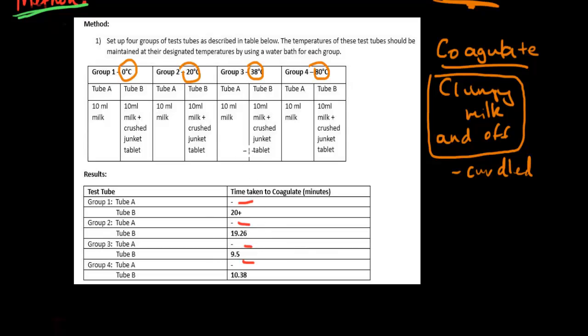The main trend is that at zero degrees Celsius, the enzyme doesn't work well and takes 20 plus minutes to curdle. At 20 degrees, it took 19 minutes and 26 seconds, also quite long. At 38 degrees, group three test tube B took only 9.5 minutes, the fastest time, meaning the enzyme is working at its best.